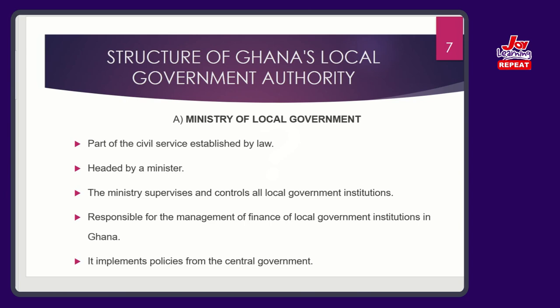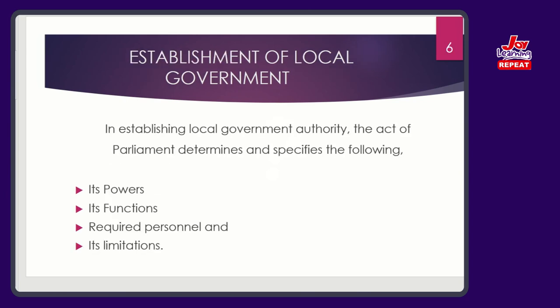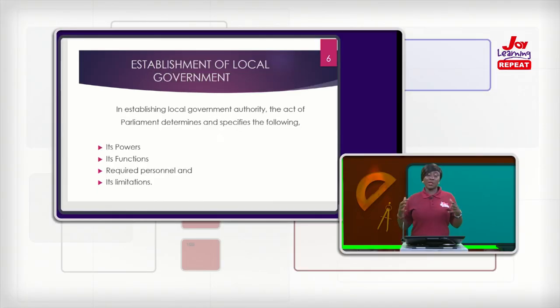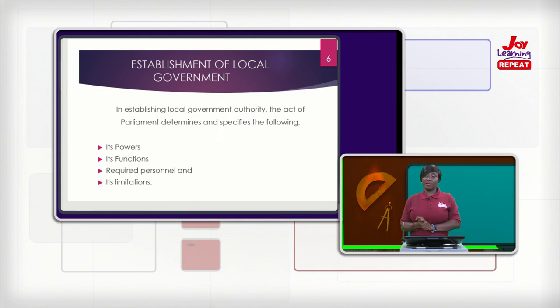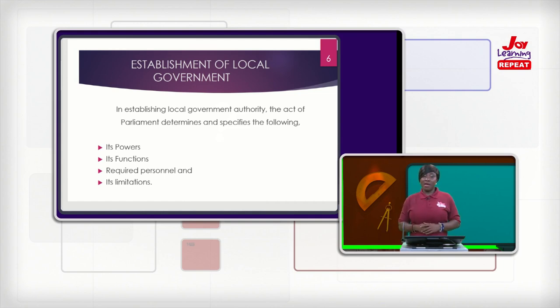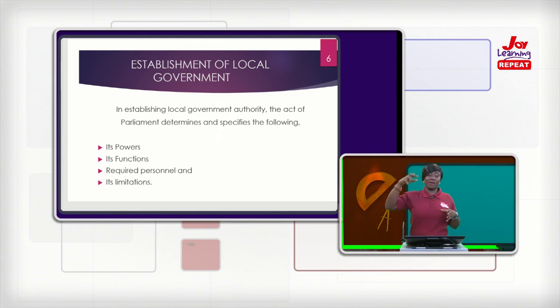There are three types. One is the councillor system, where there is an election or appointment by the central government that elects a councillor. In Britain, the councillor is known as the mayor. In Ghana, we call that particular person the district chief executive. Then in France, they have the prefectorial system, where there is a body that elects a prefect — a council of heads. The head of the council is the prefect, and the prefect oversees the administration at the local level.